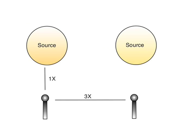Phase cancellation happens when two microphones hear the same source, and the distance between the mics doesn't follow the 3-to-1 rule. To minimize this cancellation, separate the mics by at least three times the mic-to-source distance.